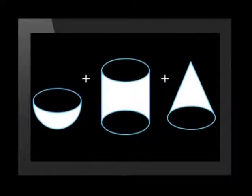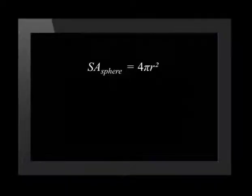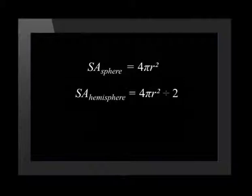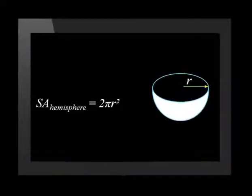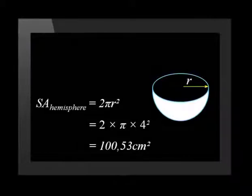The second part of this question asked us to find the surface area of the solid. We need to decide which are the exposed surfaces and only include them in our calculations. Here are the three parts of the solid — we only need to find the sum of the surface area of the shaded areas. We'll start with the hemisphere. The surface area of a sphere is calculated using the formula 4 times pi r squared. So for a hemisphere, it will be 4 times pi r squared divided by 2, which is 2 pi r squared. Substituting in 4 for the radius, we get a surface area of 100.53 centimeters squared.